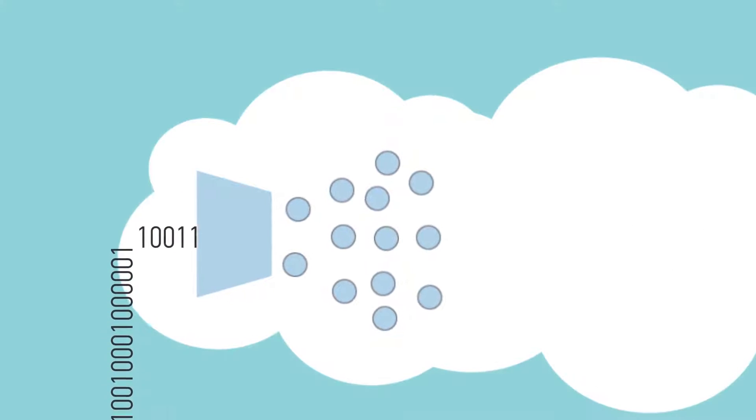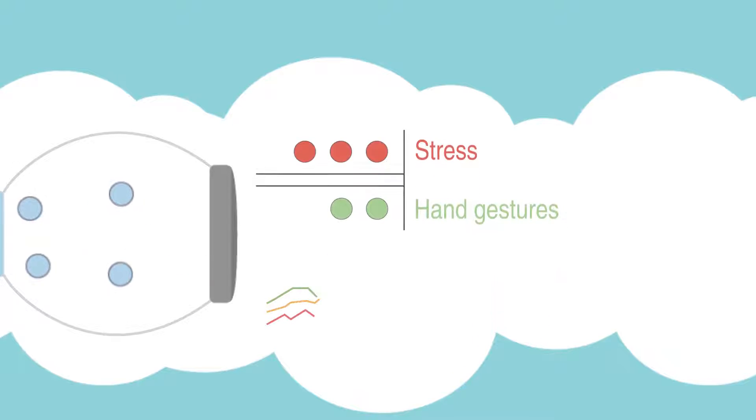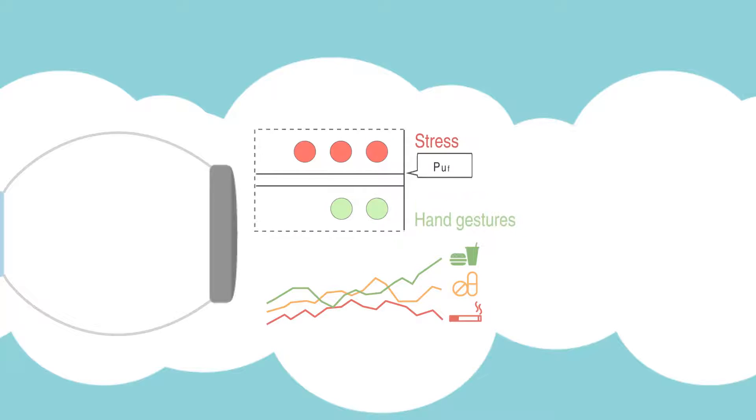MD2K has built tools that mine the wearable sensor's data deluge to identify health measures such as stress and hand gestures, which can then be analyzed to detect a variety of activities like smoking, drug use, and eating. MD2K data models sift data to distinguish between similar gestures, such as taking a puff on a cigarette as opposed to eating.